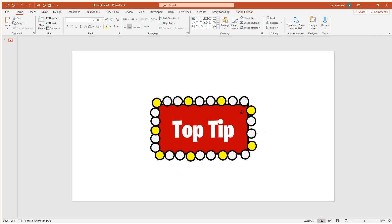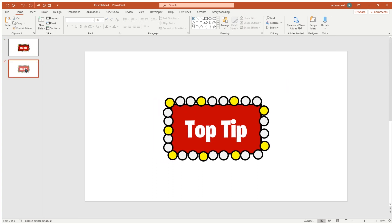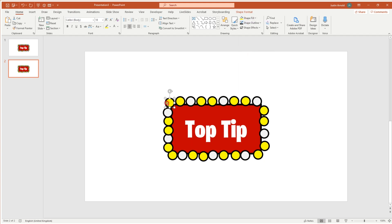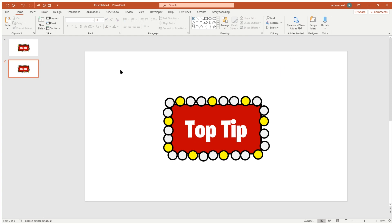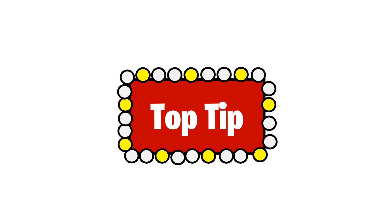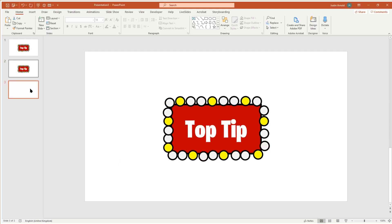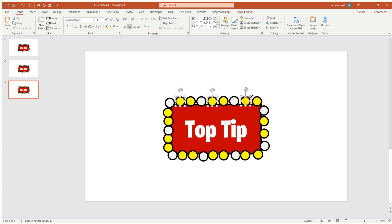Now I want to duplicate this slide — Control+D — and on the duplicate I'm going to move each of the yellow lights around by one position. I'll click on the circle just after each yellow one and color it yellow. By the way, if you're subscribed on Patreon you'll get all of this completely free — you can download the animated GIFs as well as this presentation from patreon.com/thetechtraining. You can already see if you switch between the two slides the lights rotate around. I'll do one more: Control+D to duplicate again, color the next lights yellow, then deselect the previous yellow light.